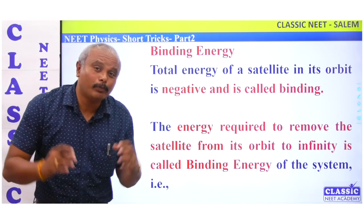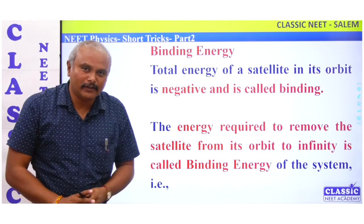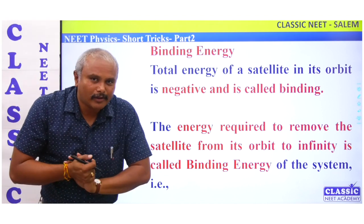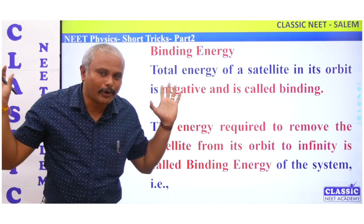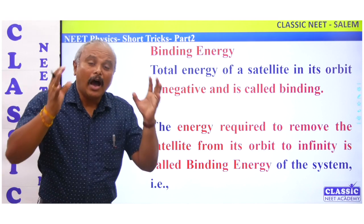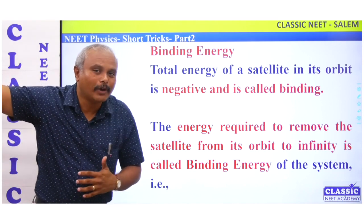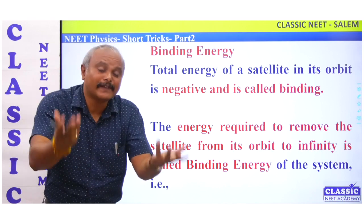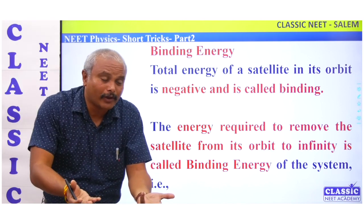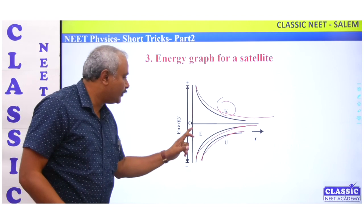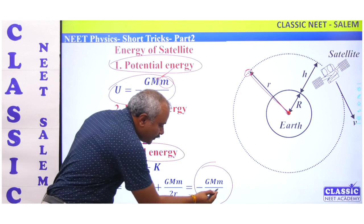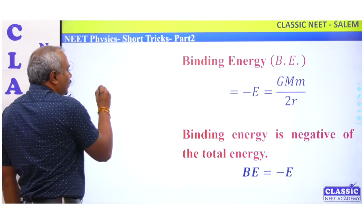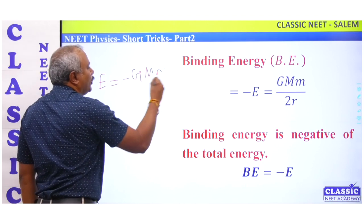Binding energy is negative — total energy is negative. That energy is negative; you can see it goes to zero. That is the trick. The total energy equals minus GMm by 2R.